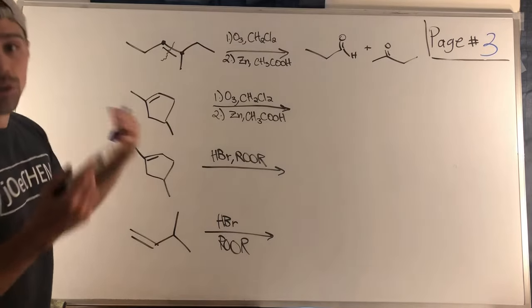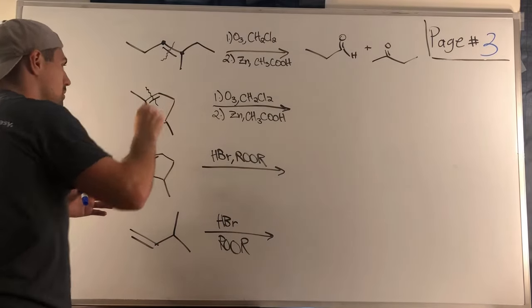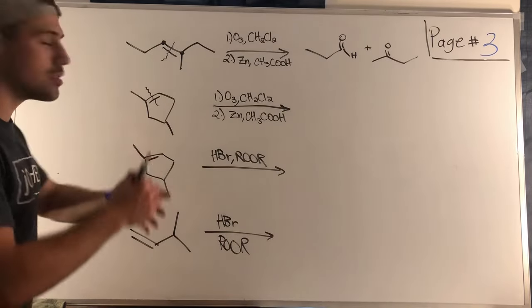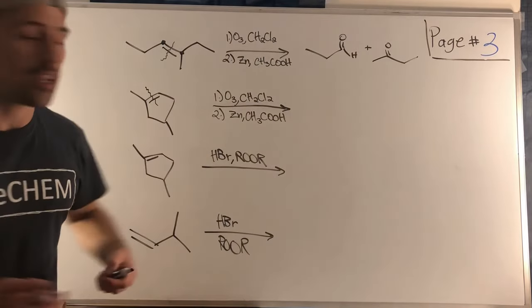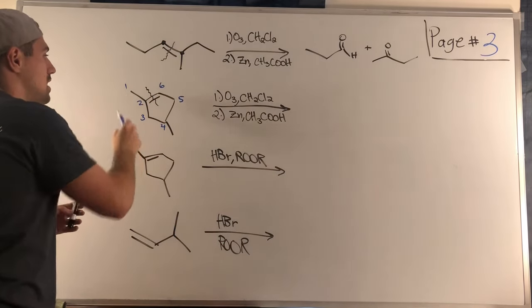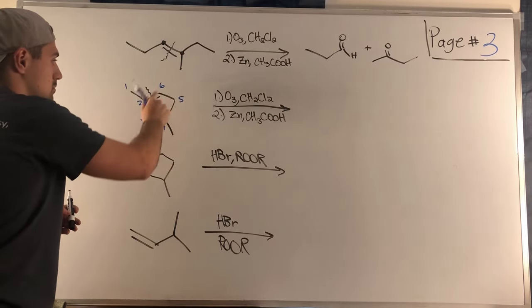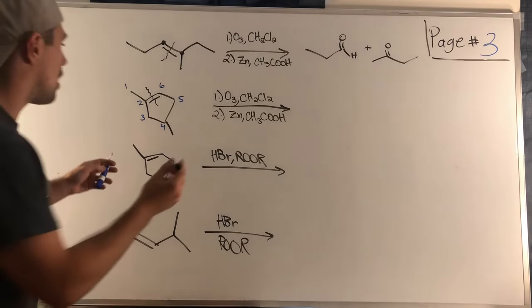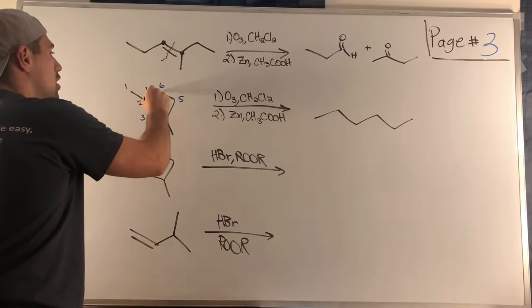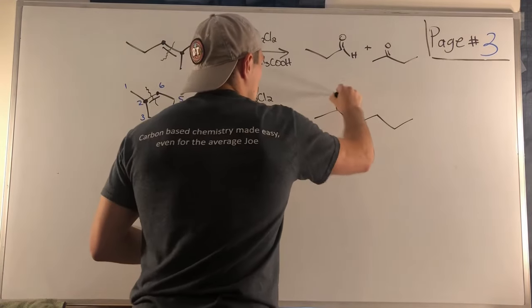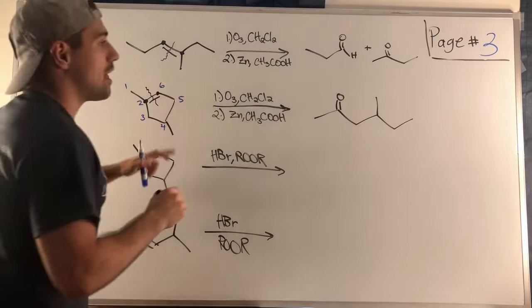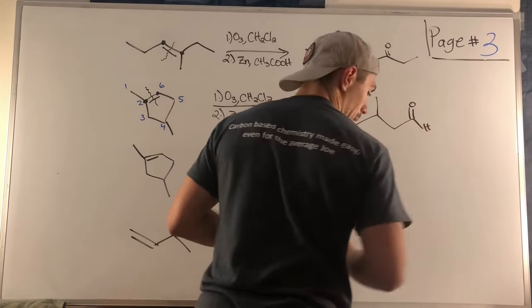The second ozonolysis breaks a ring, so we don't get two separate fragments — we get one straight-chain structure because we're just unrolling the ring. I like to number the carbons in the chain. Drawing six carbons in a row: nothing on carbon 1; ketone on carbon 2; nothing on carbon 3; methyl group on carbon 4; nothing on carbon 5; and an aldehyde on carbon 6 bringing up the caboose. Just go for regiochemistry and ignore stereochemistry.